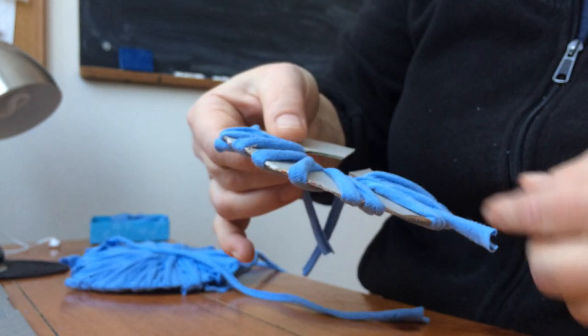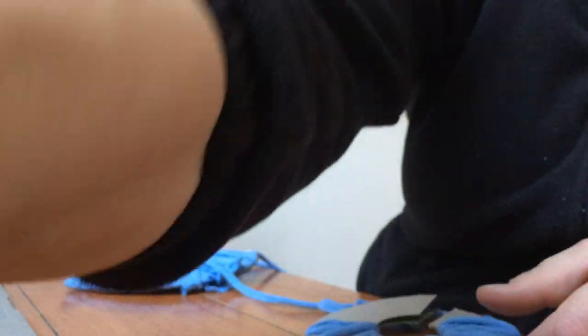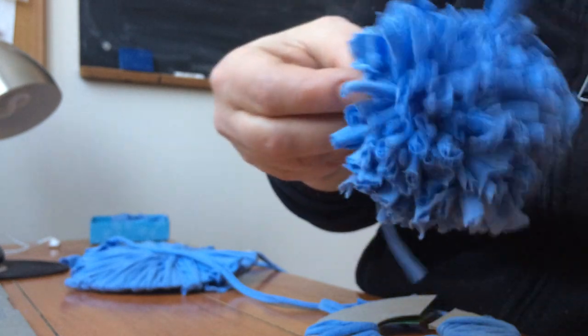On the end, when the pom-pom is ready, we basically cut off everything and you can trim it. So if you have like a little extra longer piece, you can easily trim it and make it symmetrical.